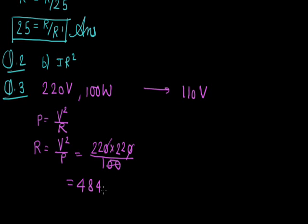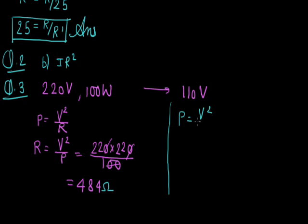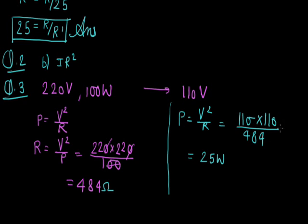If this bulb is operated at 110 volt, there will be no change in the value of resistance. This resistance will remain 484 ohm because resistance does not depend on the source. Then power consumed is P = V²/R = 110×110/484 = 25 watt. So option D is correct — 25 watt.